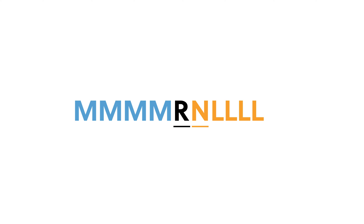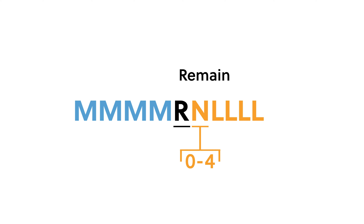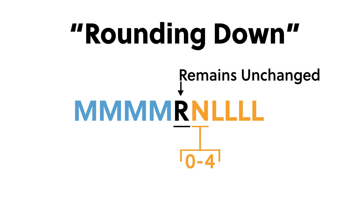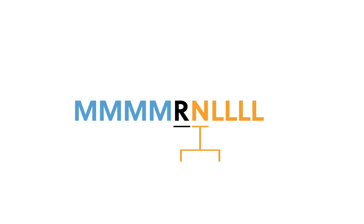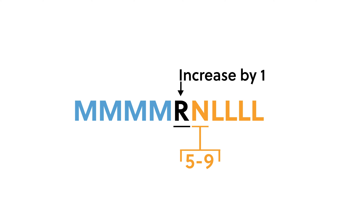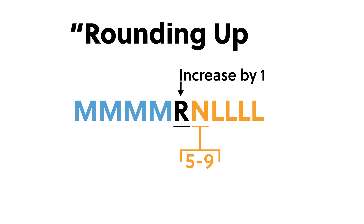If the next digit is 0 through 4, we keep the rounding digit unchanged — we call this rounding down. If the next digit is 5 through 9, we increase the rounding digit by 1 — we call this rounding up.